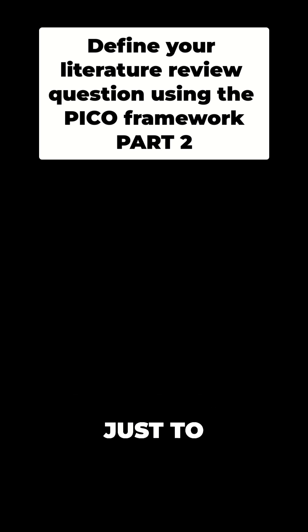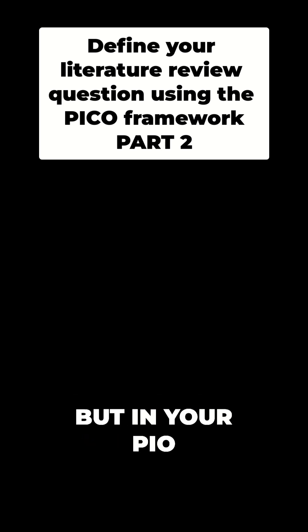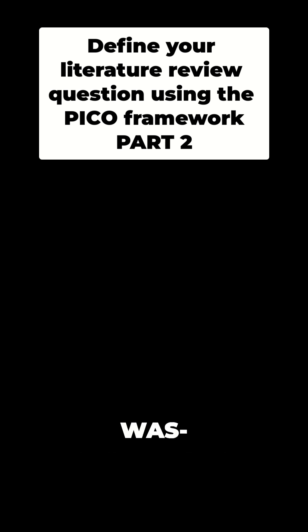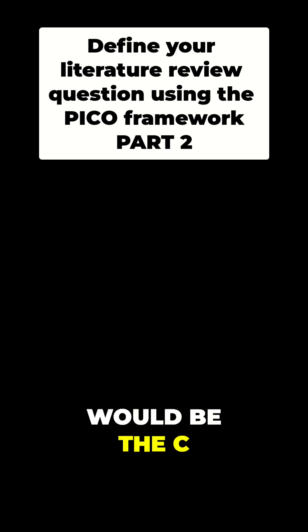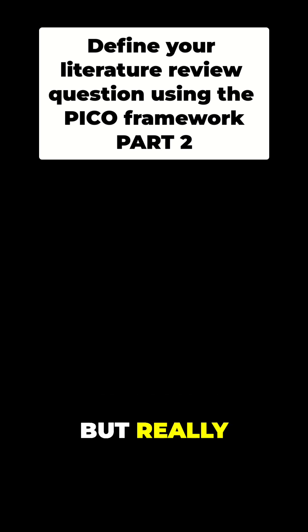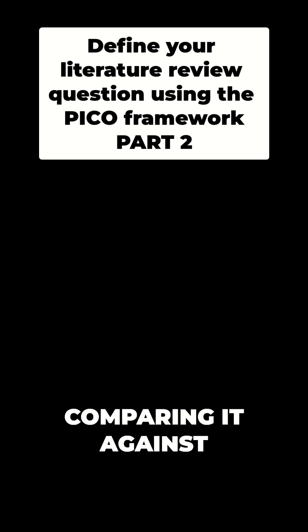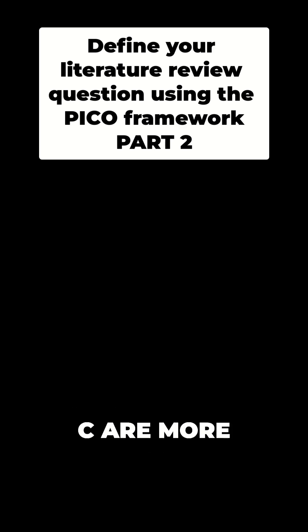Just to be clear, when we talk about PICO, in your PIO you don't have the C. The C is the comparator. So if there was more than one intervention, or you were comparing it to no intervention, that would be the C. In our software, we have some automatic PICO extraction. But if we generalize the idea of an intervention and a comparator, they're both really interventions — one of them is just the one you care more about, that's the I, and then the C is what you're comparing it against.